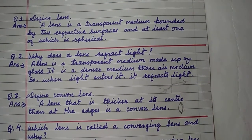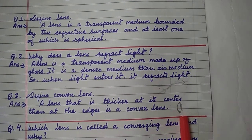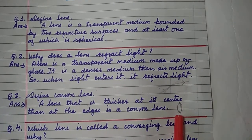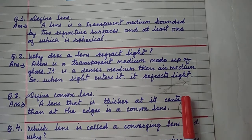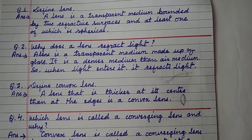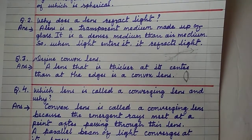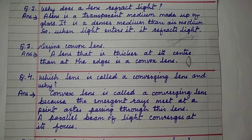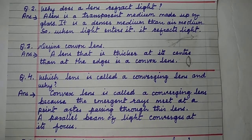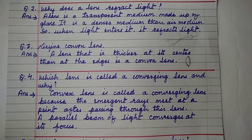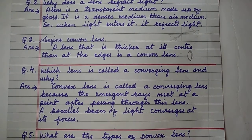Define Convex Lens. A lens that is thicker at its center than at the edges is a convex lens. The middle part is thicker and the edges are thinner. Which lens is called a converging lens and why? The convex lens is called a converging lens because the emergent rays meet at a point after passing through this lens. A parallel beam of light converges — meets at its focus. That is why convex lens is called a converging lens.